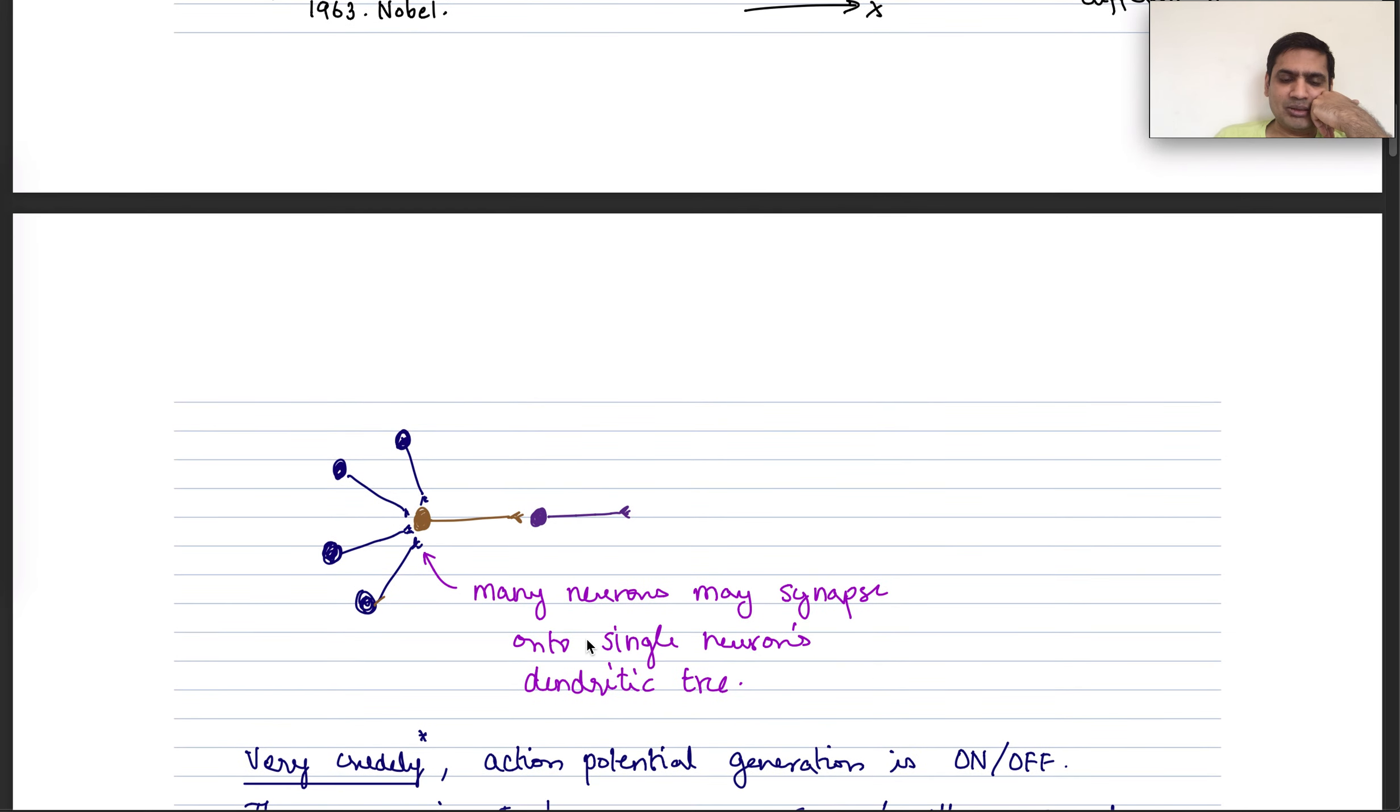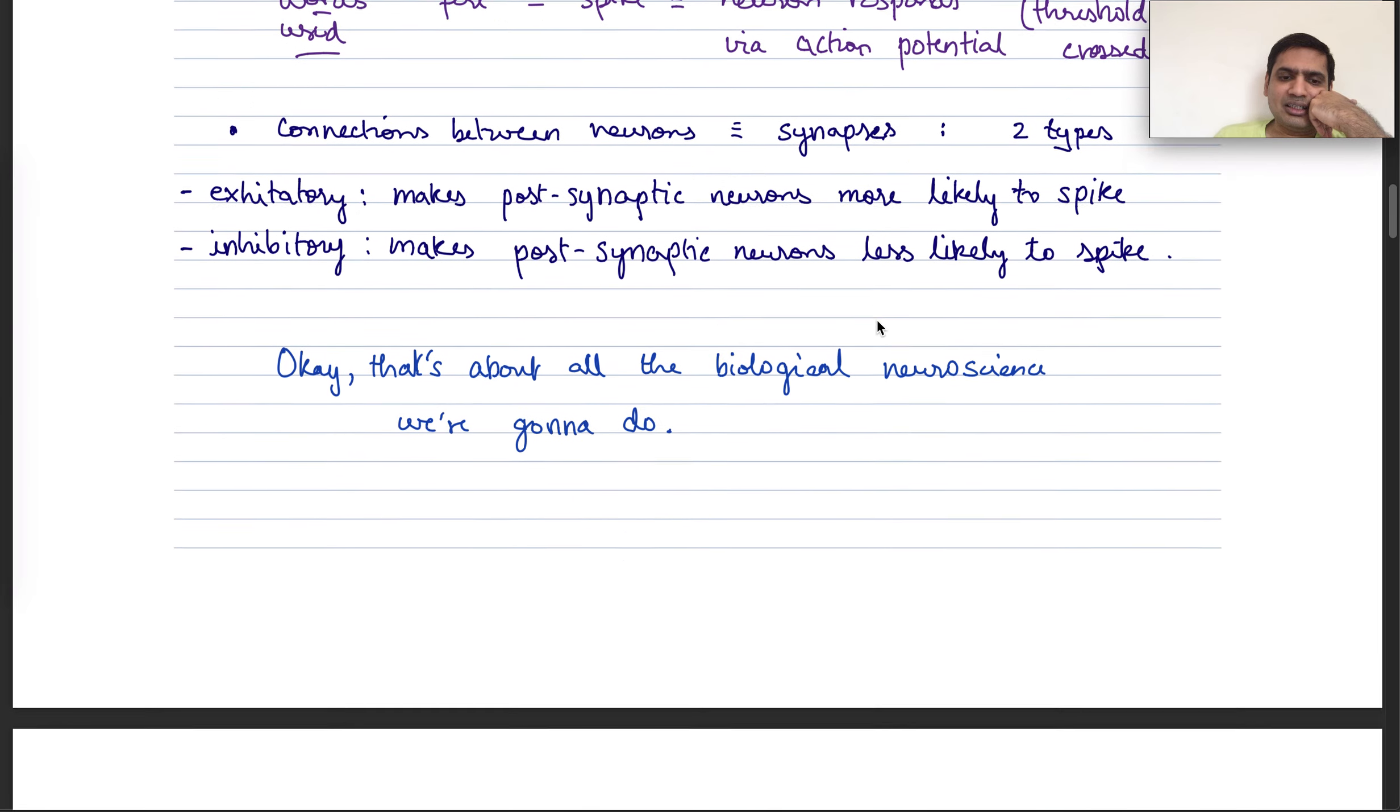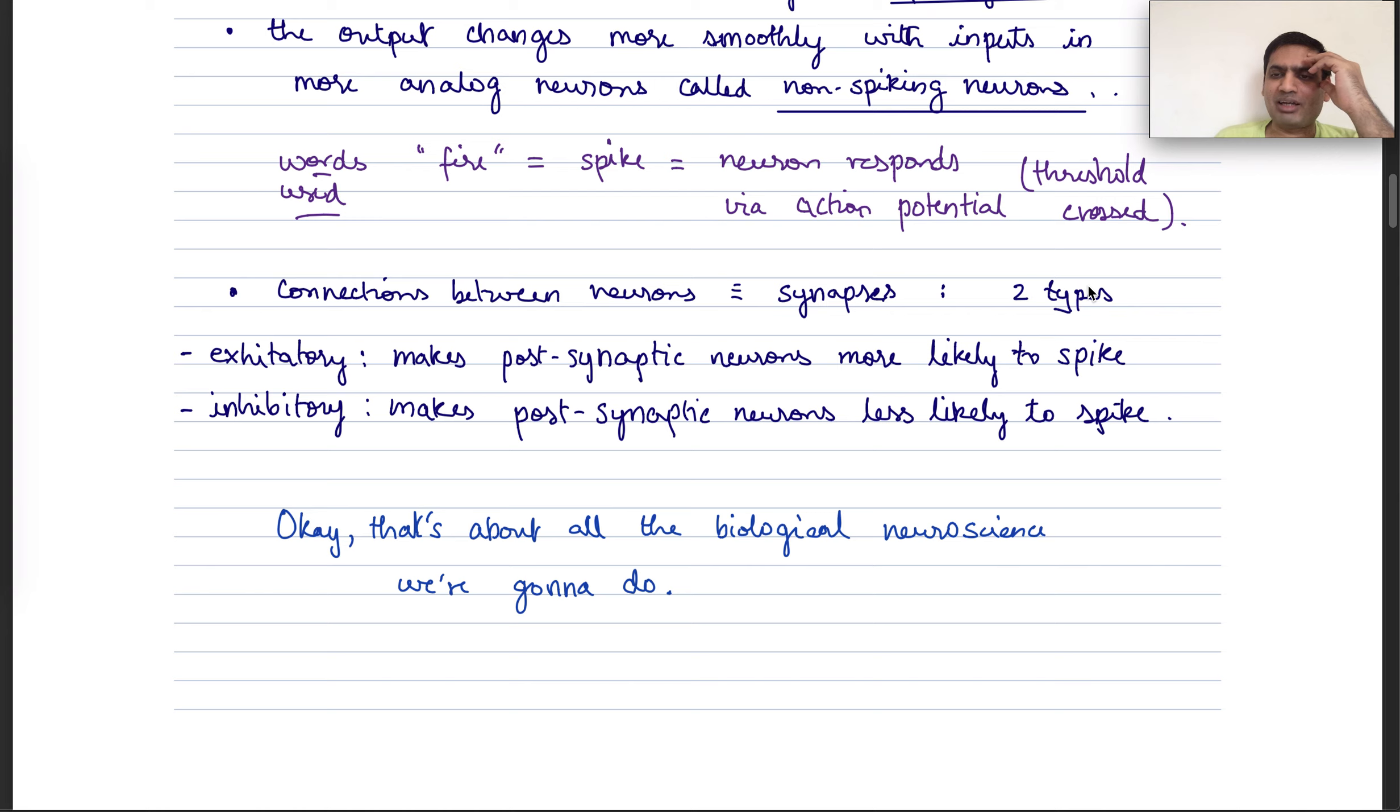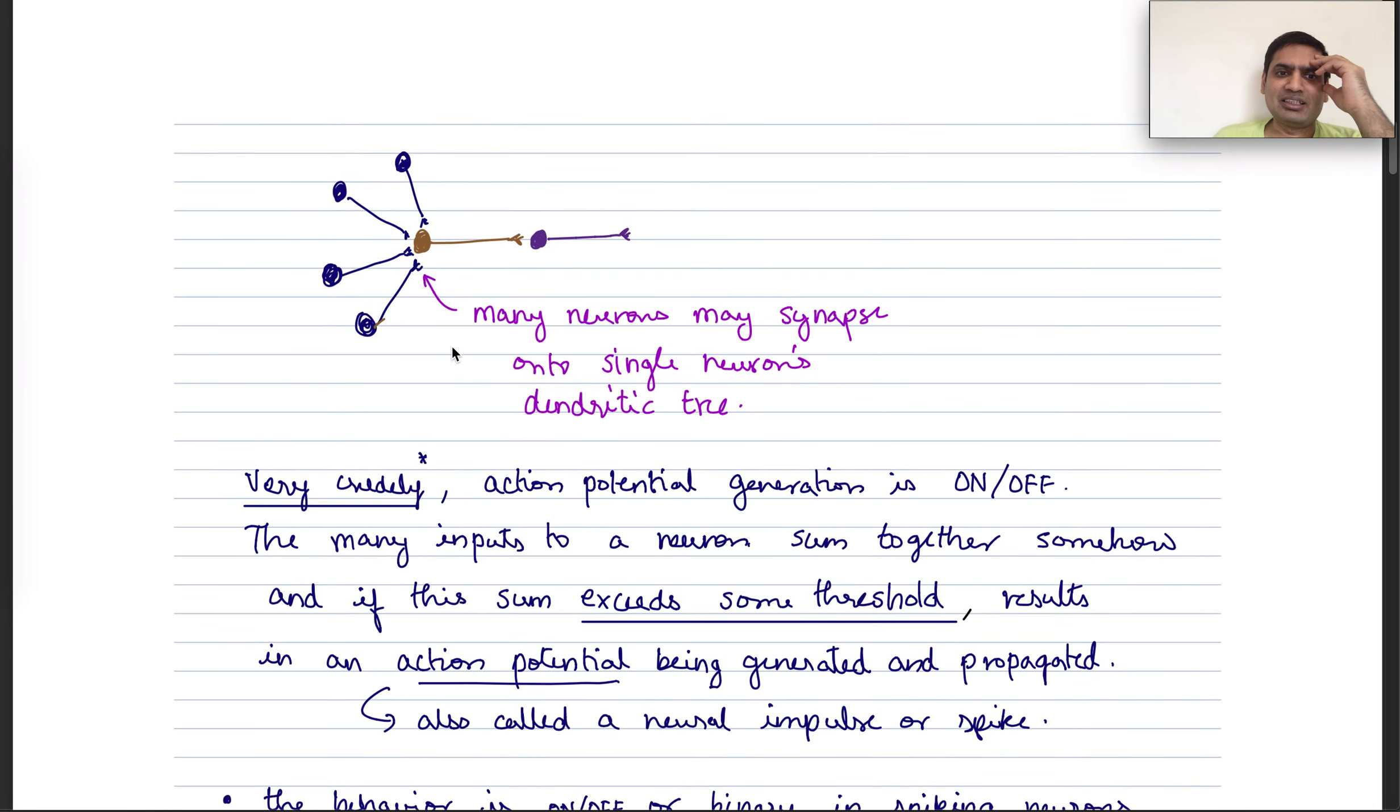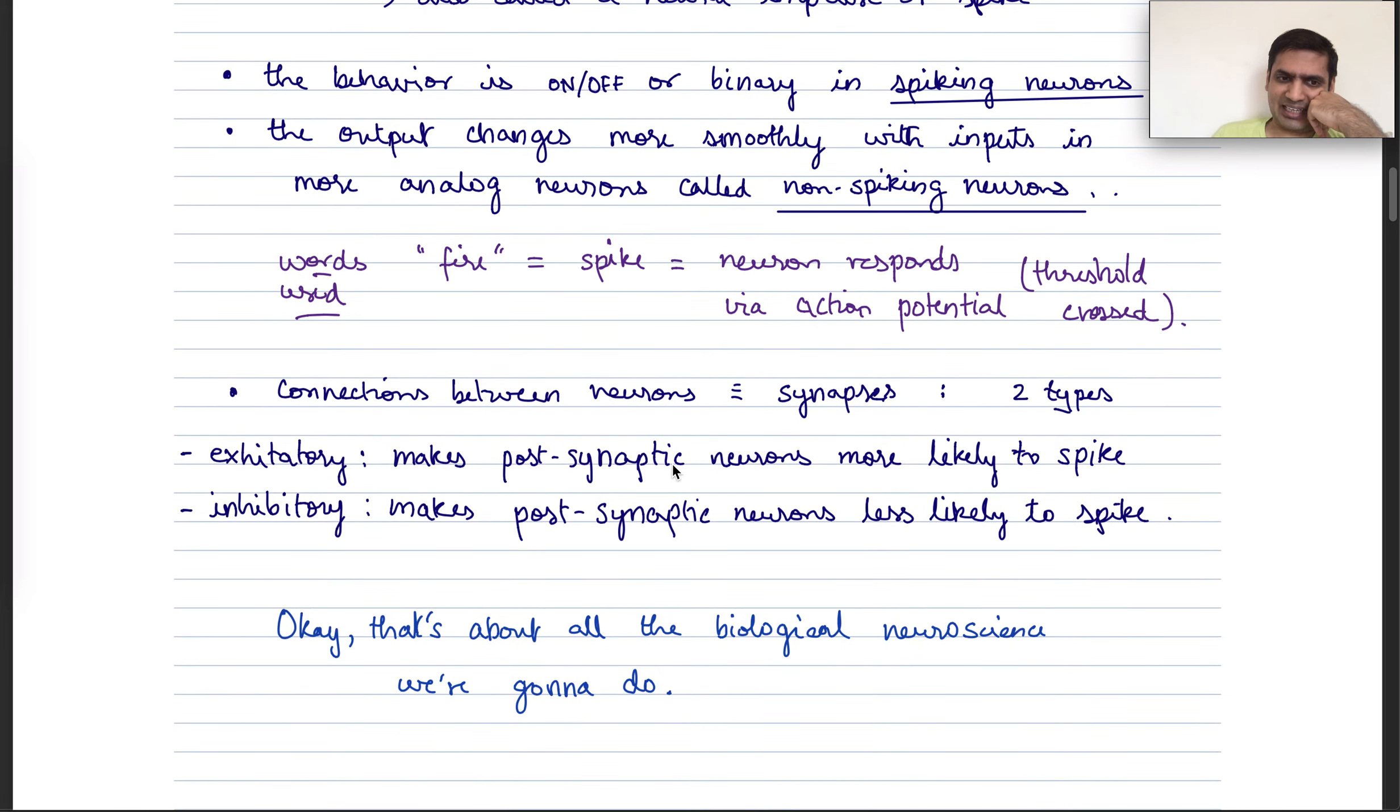The connections between neurons are called synapses. And again, very broadly, there are two types of synapses, excitatory and inhibitory. Excitatory connections will make the post-synaptic neurons more likely to spike. If this synapse is excitatory, it will make this neuron more likely to fire. And if it's inhibitory, it's kind of like a negative sign on the signal, it'll make this neuron less likely to fire. So it's not just a pure sum, there can be positives and negatives, canceling each other.